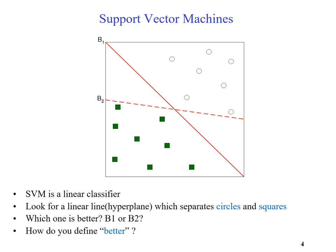SVM is a linear classifier — its classifier is represented as a straight line. In SVM, what we do is look for a straight line which divides two datasets. But there are many lines which divide these two data groups. Let's take a look at lines B1 and B2, and see which one is better. Intuitively, B1 looks better than B2.